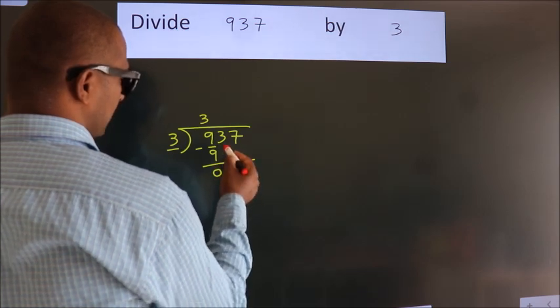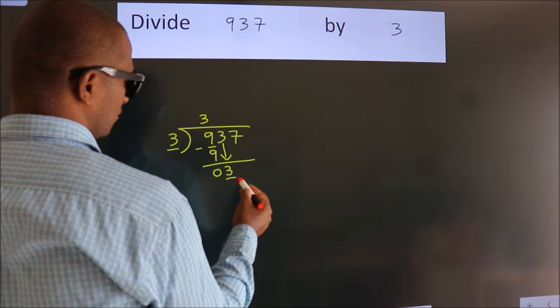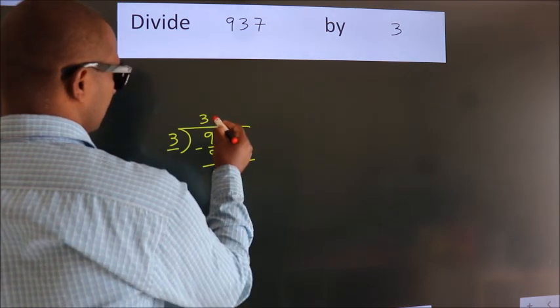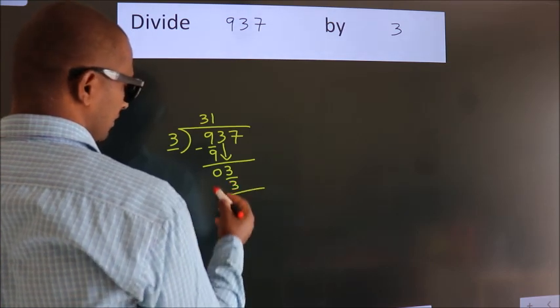After this, bring down the beside number. So 3 down. When do we get 3 in 3 table? 3 times 1 is 3. Now we subtract.